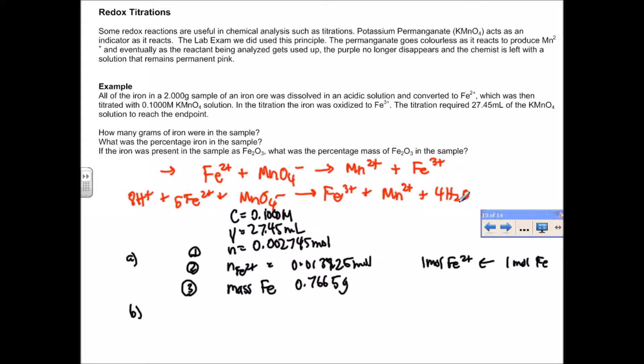As a percentage, we had a 2-gram sample and that's the mass of the pure iron in that sample. As a percentage, it's 38.3%, which was found by taking 0.7665 and dividing by 2 times 100, and that gives us the percentage.